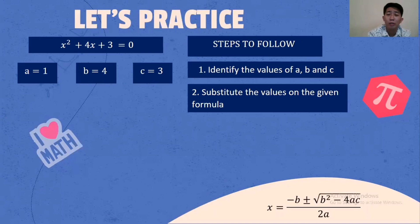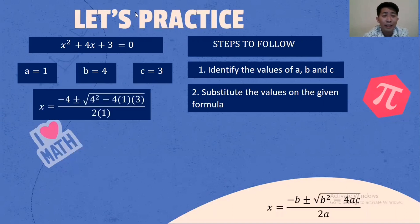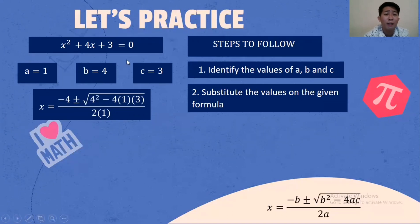Number 2, substitute the values on the given formula. We have negative B where B equals 4, B squared is 4 squared which is 4, value of A is 1, and value of C is 3. Value of A is 1. So we substitute all the values into the formula. That's the second step.